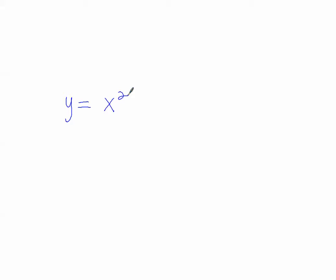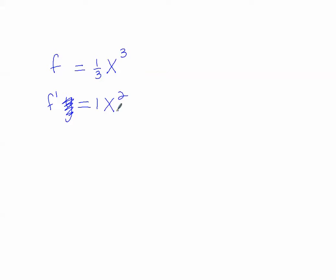If I give you a function y equals x squared and say take the anti-derivative, I'm asking what function had to be there to give the derivative of x squared. Thinking backwards, the exponent had to be one bigger. Multiplying by three gives a coefficient of one, so we need a one-third coefficient. So the anti-derivative of y equals x squared is f of x equals one-third x cubed — or at least one version of the anti-derivative.